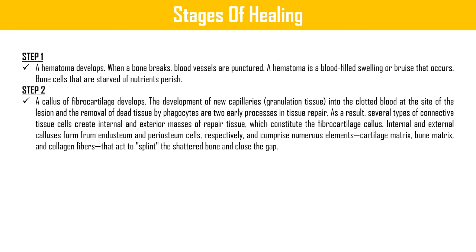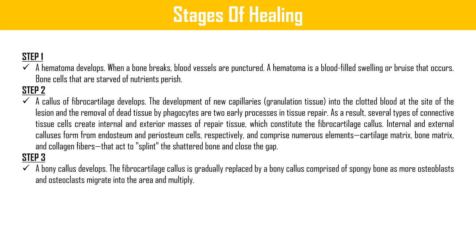Step two: a callus of fibrocartilage develops. New capillaries and granulation tissue grow into the clotted blood at the lesion site, and dead tissue is removed by phagocytes. Several types of connective tissue cells create internal and external masses of repair tissue — the fibrocartilage callus. These calluses form from endosteum and periosteum cells respectively and comprise cartilage matrix, bone matrix, and collagen fibers that act to splint the shattered bone and close the gap.